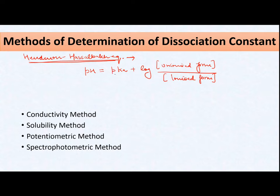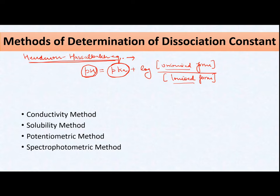Here, pKa is the dissociation constant of that acid. The two concentrations in the log term — unionized and ionized — are the concentrations of that acid in its two forms. The pH here is not of the acid itself, but of the media in which the acid is dissociating. So if I know the concentration of the unionized form and the ionized form at a particular pH of the media, I can easily calculate the pKa of that drug.